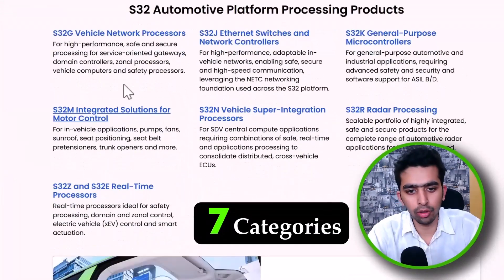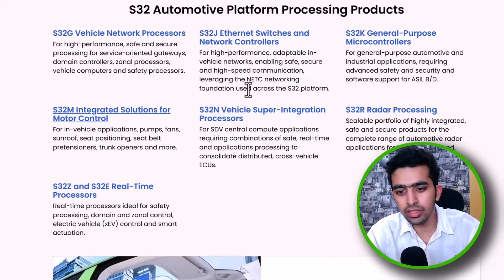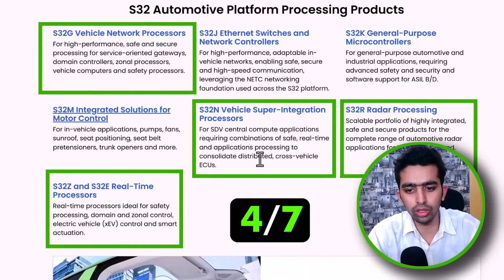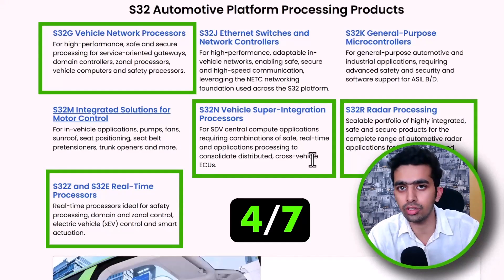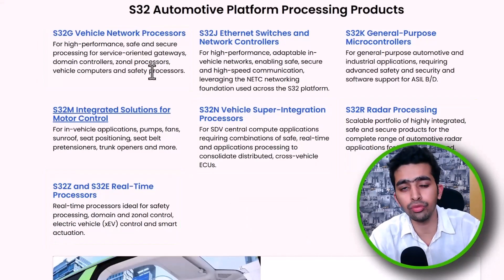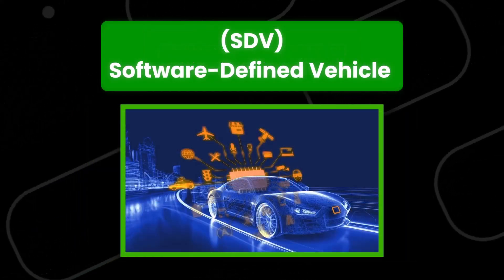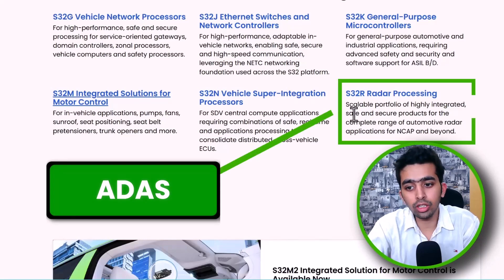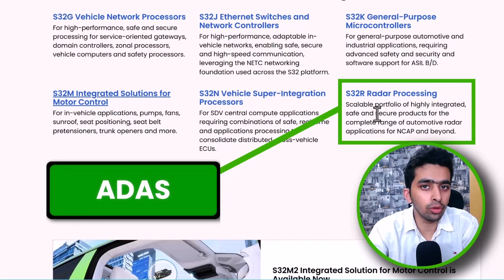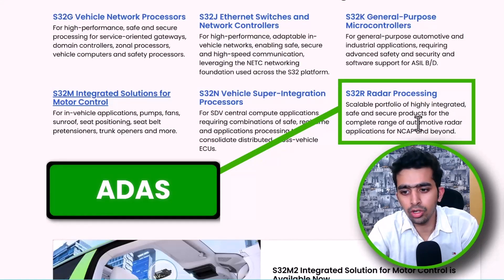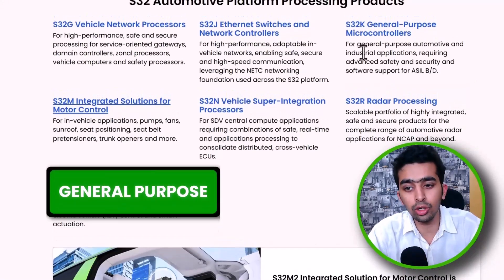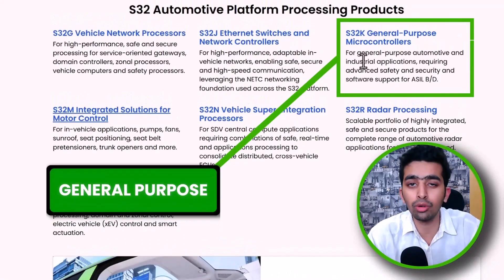Let's briefly cover the seven different categories of NXP S32 microcontrollers and microprocessors. Four of them — S32G, S32N, S32R, and S32Z/E — are microprocessors used for applications like zonal gateways, software-defined vehicles, and ADAS. S32R is a dedicated microprocessor for radar-based ADAS applications, with dedicated radar peripherals and connectivity features.